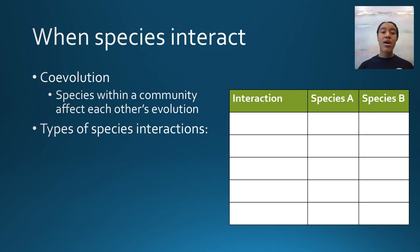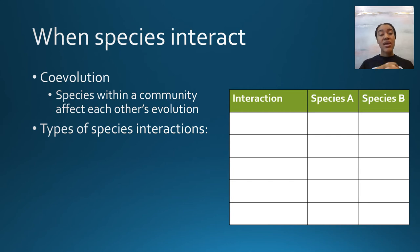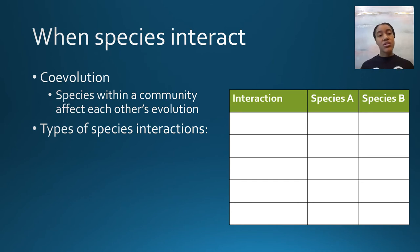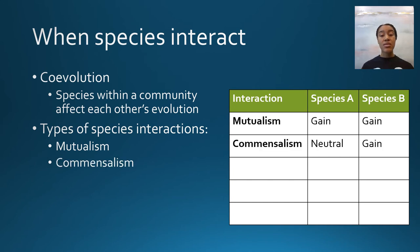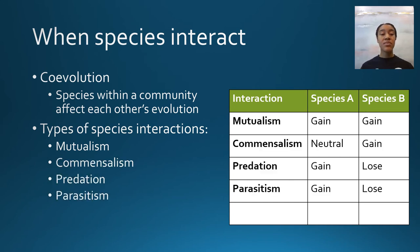Now we're going to switch gears and talk about species interactions. Within an area, various species interact and actually affect each other's evolution — this is called co-evolution. There are various types of interactions: mutualism, commensalism, predation, parasitism, and competition. We'll talk about each of these in more detail.